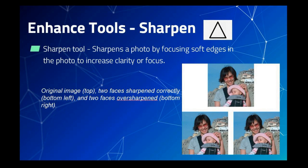The Sharpen tool is used to sharpen a photo by focusing soft edges to increase its clarity or focus. The top shows the original image; the bottom right shows two faces that are over-sharpened, and the bottom left shows two faces that are sharpened correctly.